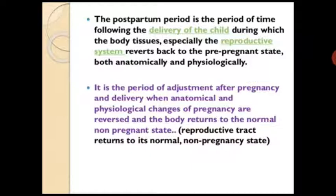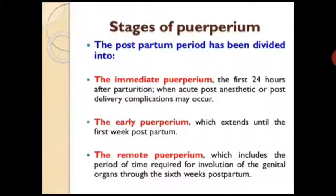The stages of puerperium are: immediate puerperium, early puerperium, and remote puerperium. Immediate puerperium covers the first 24 hours after delivery of the placenta. Early puerperium covers from 24 hours to the 7th day, i.e., the first week postpartum. Remote puerperium covers from the 7th day to the 6th week.